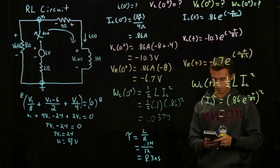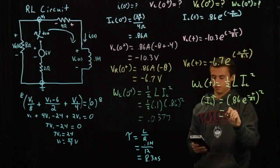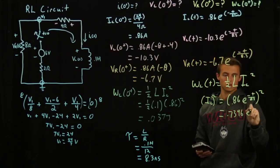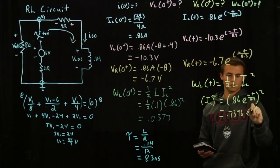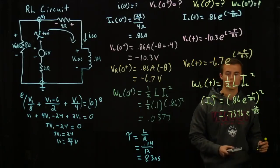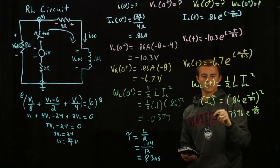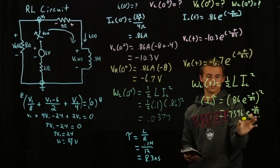0.86 squared is 0.7396 times e to negative 2T over 8.3. And then you plug this equation back in right there.